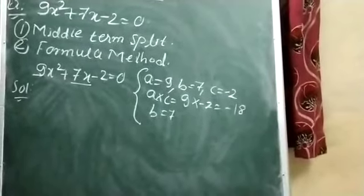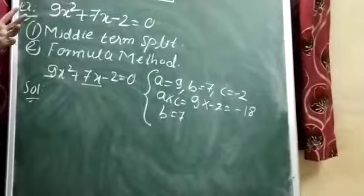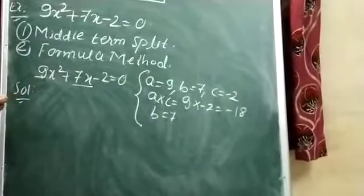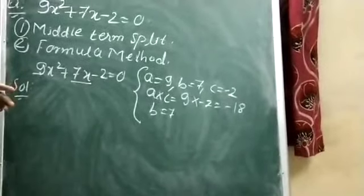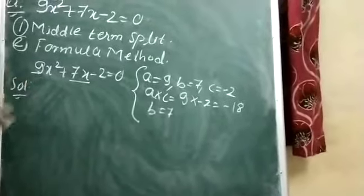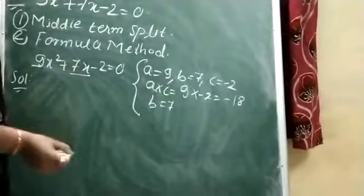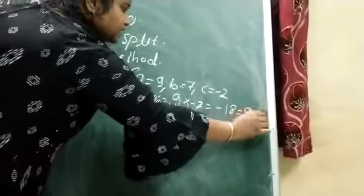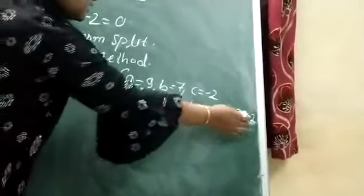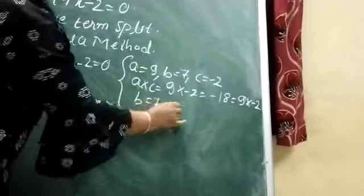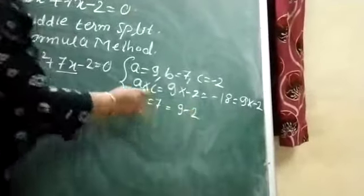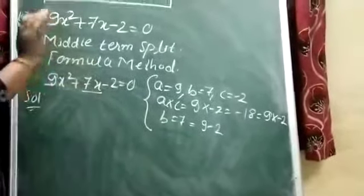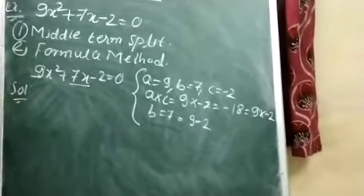Now we want two digits. By multiplying that digit, we must get the answer as -18. By adding or subtracting it, we must get the answer as 7. I am taking the numbers 9 and -2, because 9 × (-2) = -18 and 9 - 2 = 7. Now put the value of b here with x as its coefficient.